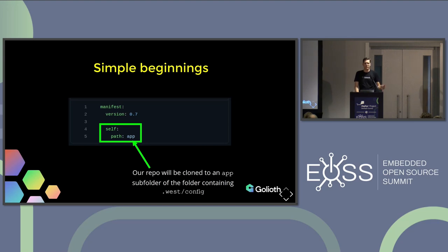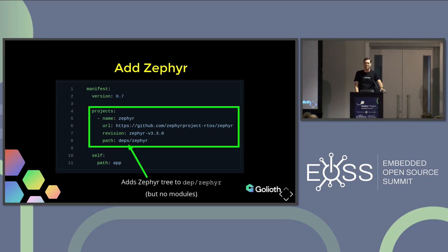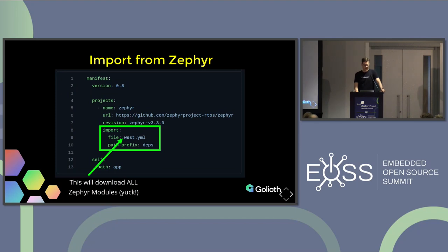The next step is to actually get Zephyr into the project, because we want our own dedicated version of the Zephyr tree in our application. I've added a 'projects' entry that calls out the name 'zephyr', a URL of where to find the code, the actual revision — this is a git tag from Zephyr — and then the path. This is saying: I want a deps folder and this particular package should go into zephyr. If we try to build this though, it's not going to build, because we don't have things like the hardware abstraction layer. So we need to go back and add some imports to Zephyr.